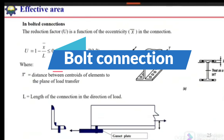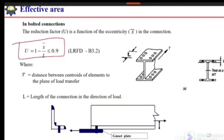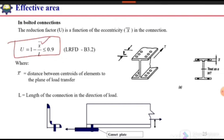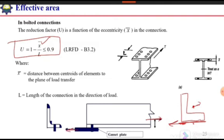For bolted connections, the strength reduction factor is calculated using the formula, and its value should be less than 0.9. X-bar is the eccentricity of the connection. For an angle under tension load, the whole angle is stressed uniformly and the resultant tensile force passes through the centroid of the section. At the connection, the applied force passes through the centroid of the section, but the resistive force passes through the centroid of the gusset plate — creating an eccentricity. This eccentricity is X-bar.